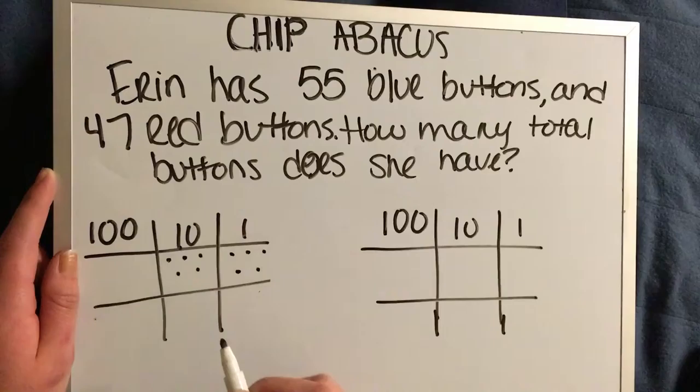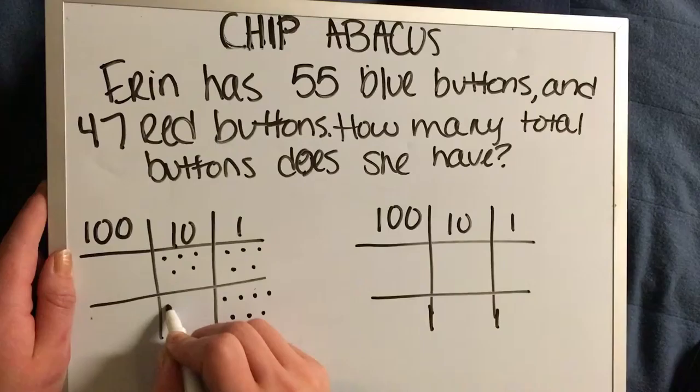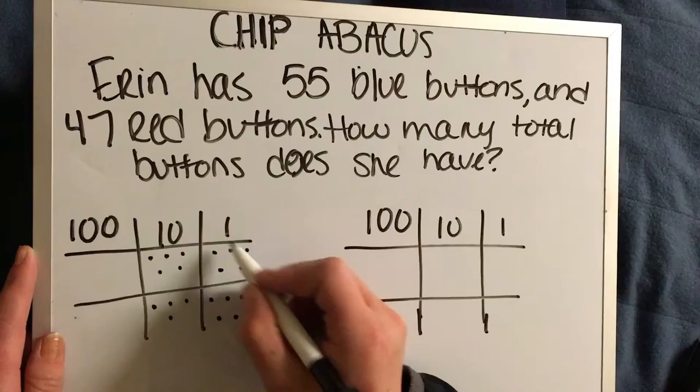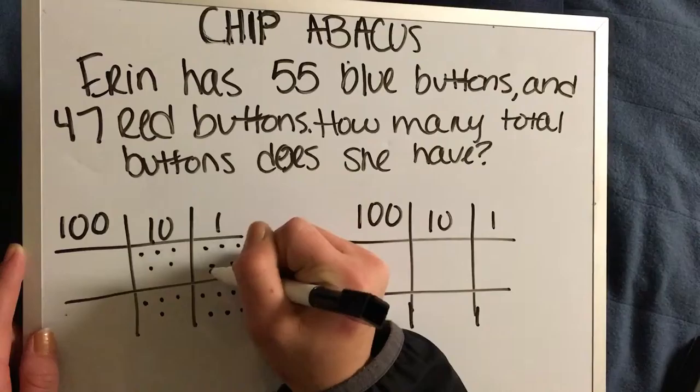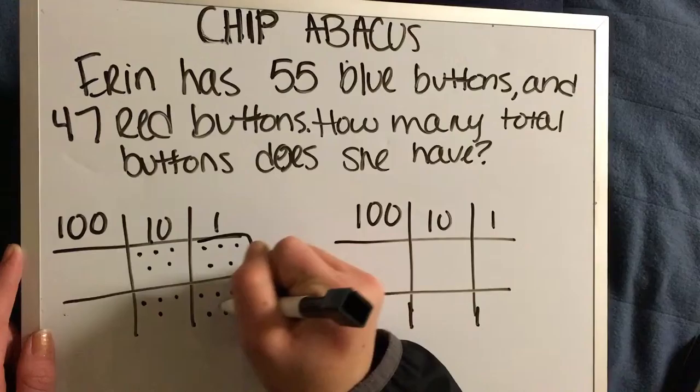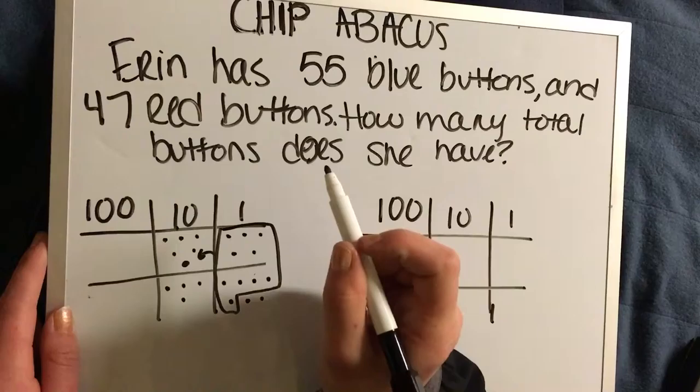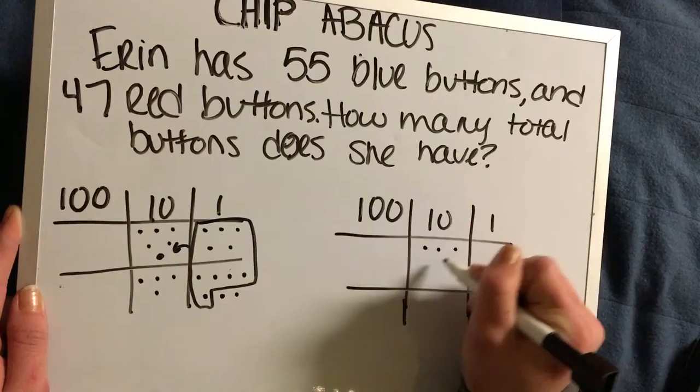So again we have 55, so we put five here from the ones column and five here in the tens, and that equals 55. And then we have seven here in the next one down and four here to make 47. So now again we want to count to see if we can make ten dots all and group them all together for the next column. So one, two, three, four, five, six, seven, eight, nine, ten. So you have ten. All right, and we're gonna draw another arrow, put a dot here.